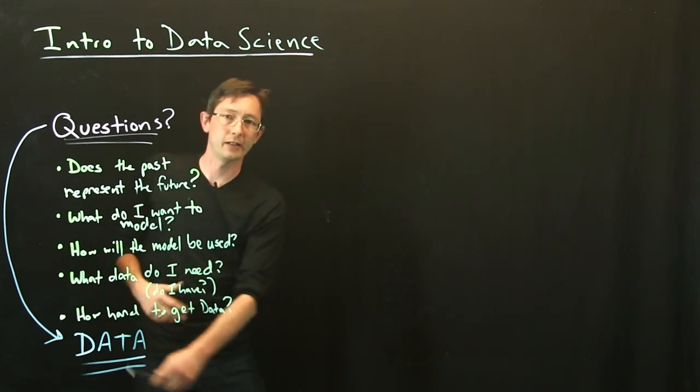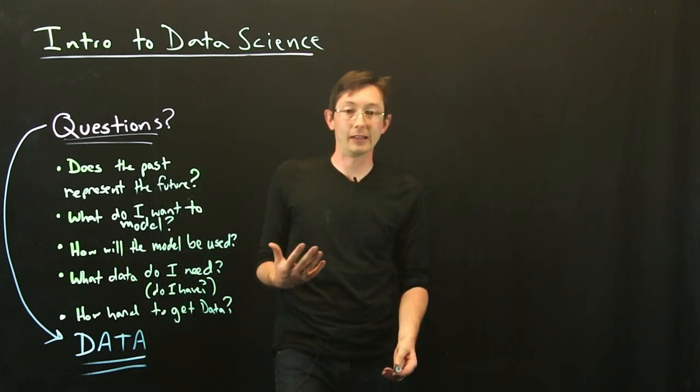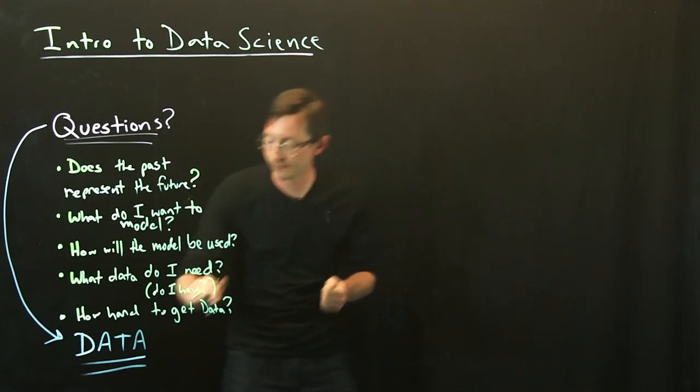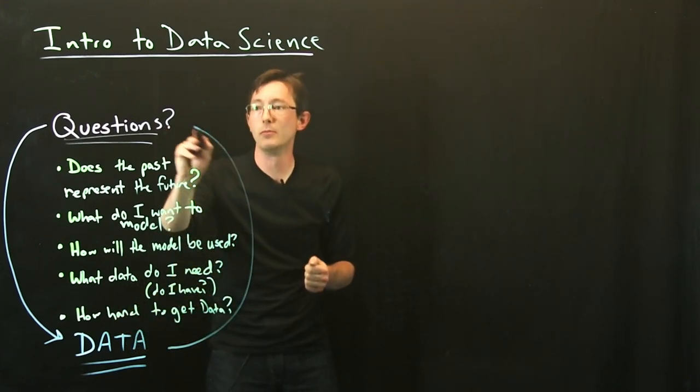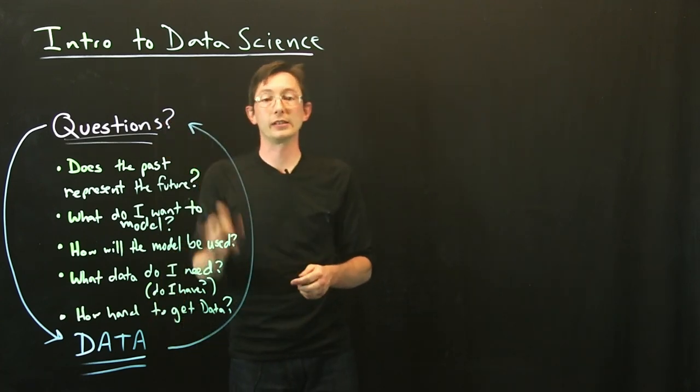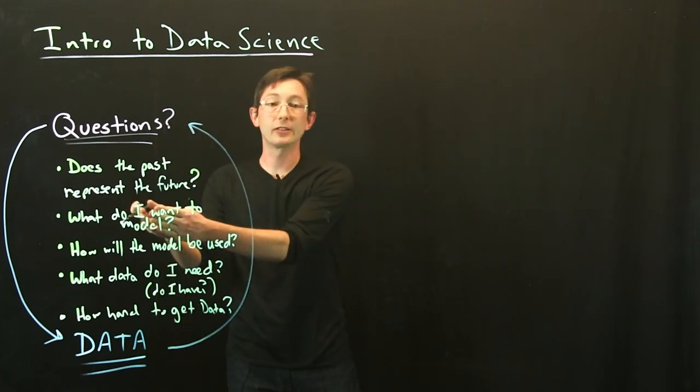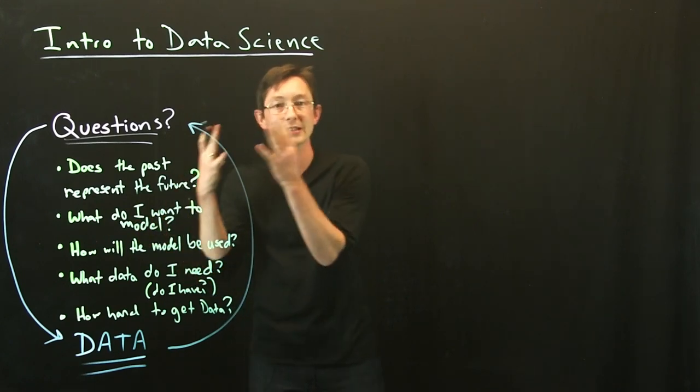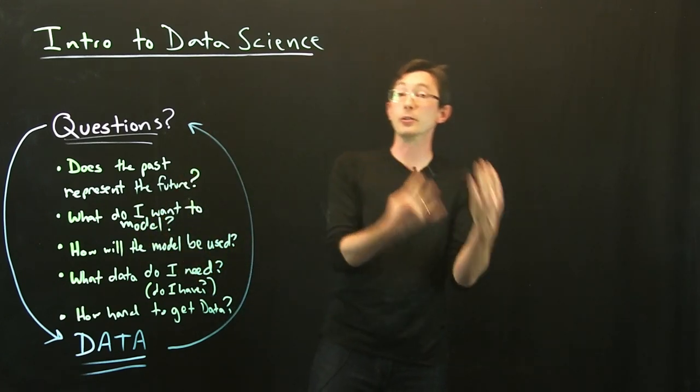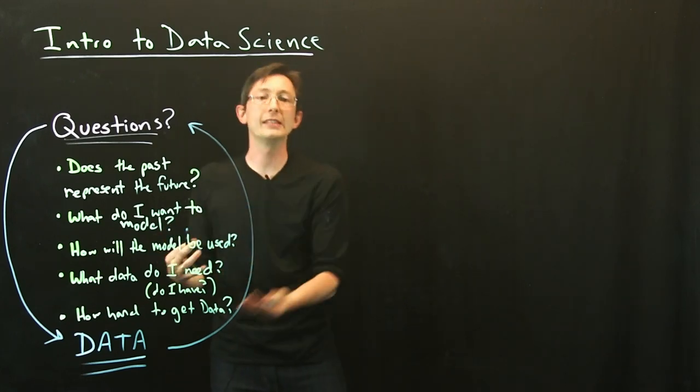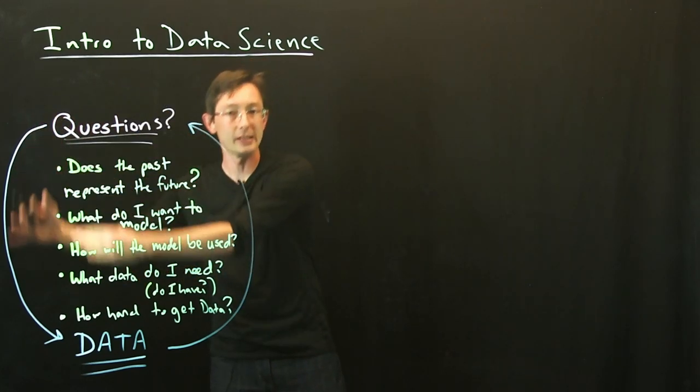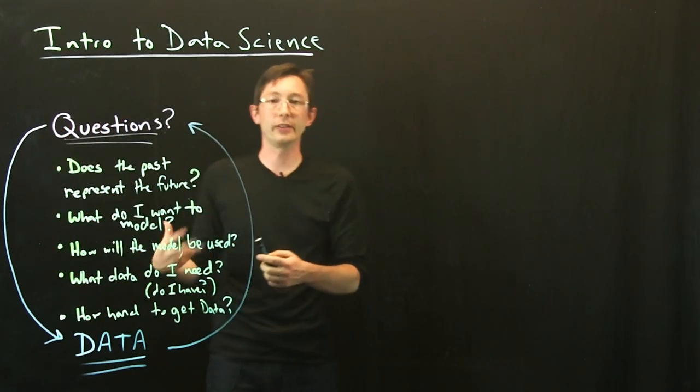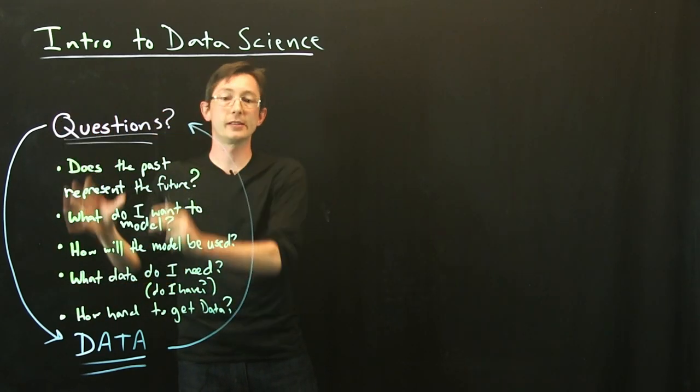But then you start analyzing the data. And what you might realize is that your question wasn't the right question in the first place. If you're lucky, this will motivate a refinement of your questions. Maybe you decide that there's something different you can model or that you can't model what you thought. Maybe there's just not the information in the data that you thought there would be, but that motivates a different set of questioning, a different use case. And so this is a feedback process. And at multiple levels, you want this to feed back between questions and data.